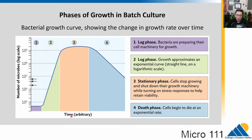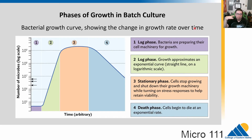On this graph, time is on the bottom with no specific units — it's hypothetical. On the left is the number of cells on a logarithmic scale, so each step goes up by a factor of 10. We start at time zero when bacteria are dropped into the growth medium. The bacteria begin with a lag phase, then go into exponential or log phase growth, then taper off into stationary phase, and finally into a death and decline phase. This is a closed system — nothing is added or removed.